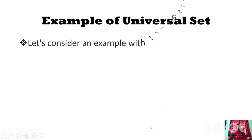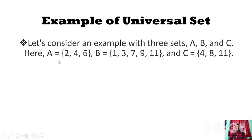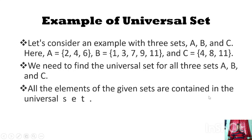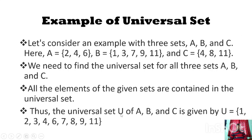Let's consider an example: sets A = {2, 4, 6}, B = {1, 3, 7, 9, 11}, C = {4, 8, 11}. The universal set U of sets A, B, C is U = {1, 2, 3, 4, 6, 7, 8, 9, 11}. All elements of set A are in U, so A is a subset of U. Similarly, B is a subset of U and C is a subset of U. It means all the sets under consideration are subsets of the universal set U — that particular set is known as the universal set.